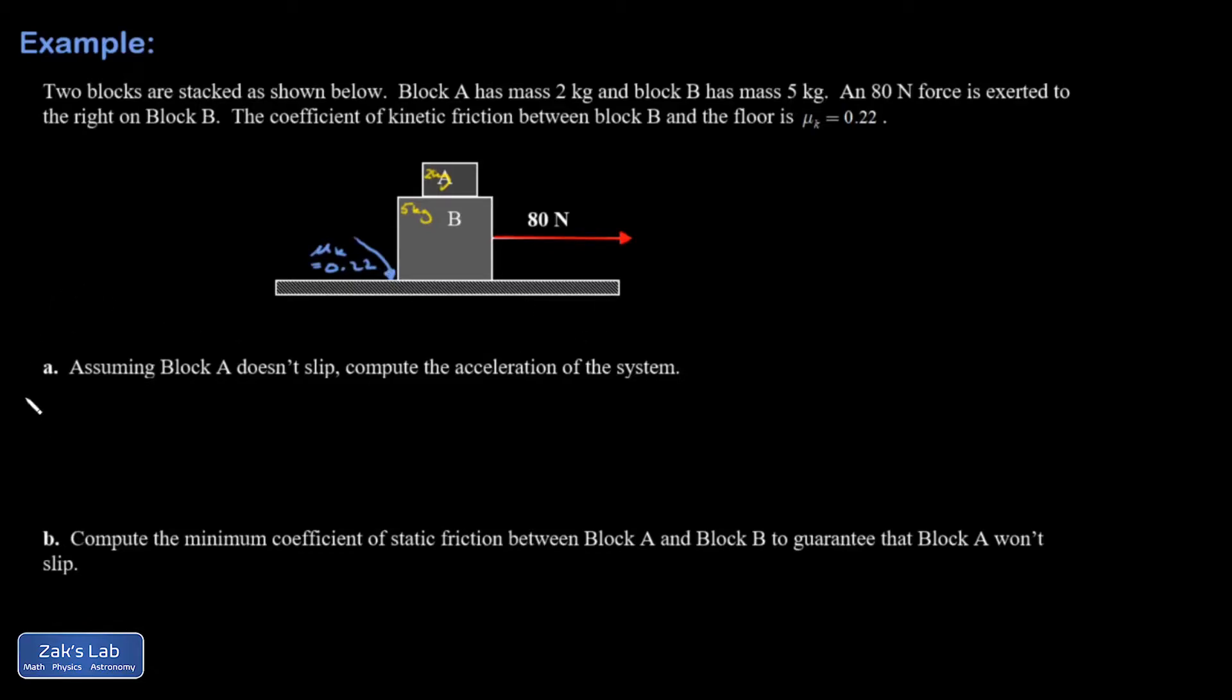And then part A says, assuming block A doesn't slip, compute the acceleration of the system. So I hope that you can visualize what would happen if you pulled on B too hard. It could just slide out from under block A. So that's why I had to say this. It's like the magic trick of pulling out the tablecloth from underneath all the dishes. If you pull hard enough, it should be able to slip. And we're going to get into analyzing some of the details of that phenomenon in part B. So assuming block A doesn't slip, compute the acceleration of the system.